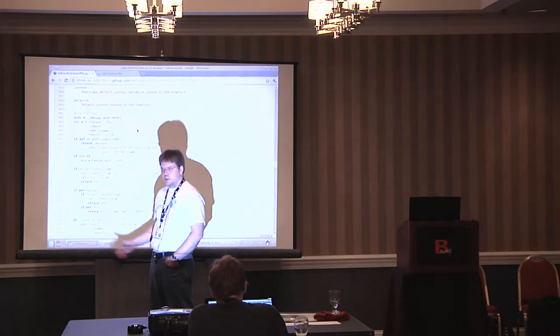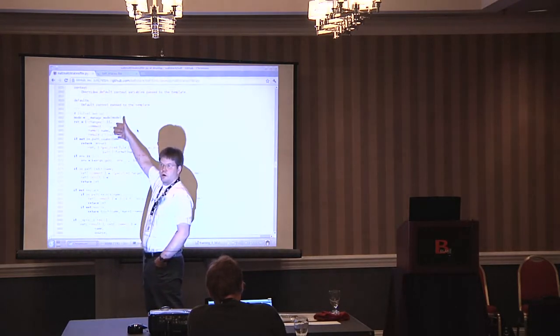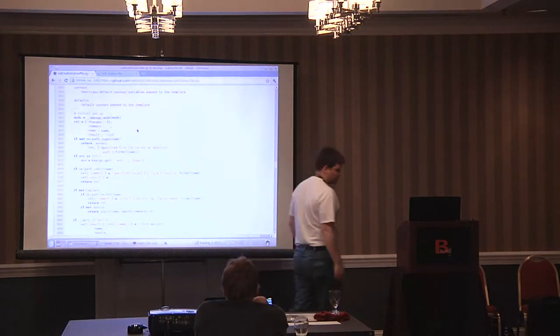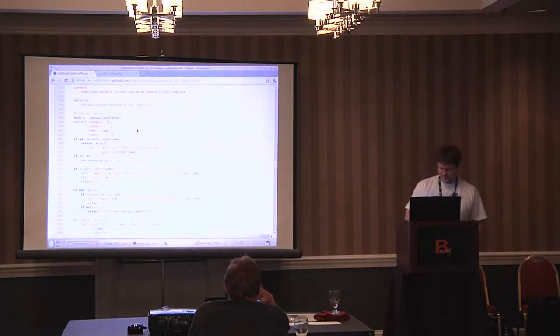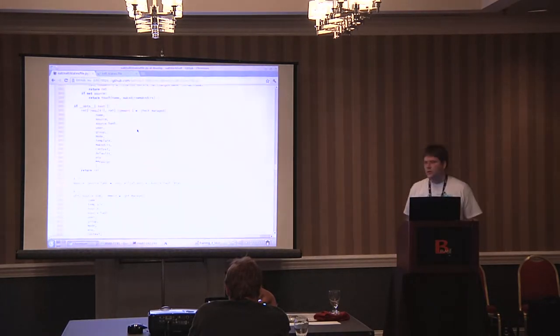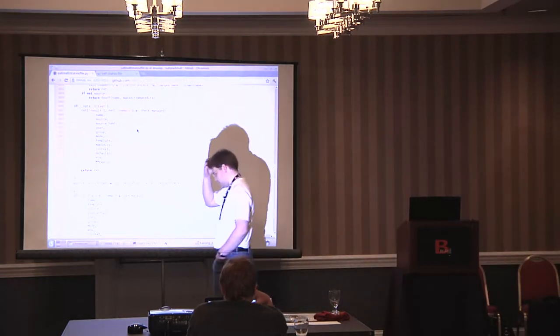And so as you recall, when we were looking at the console after running states, it said result true, name name, comment, and what all the changes were. This is the dictionary that's just returned raw from this function. And then that's added into the total return data and reported back.